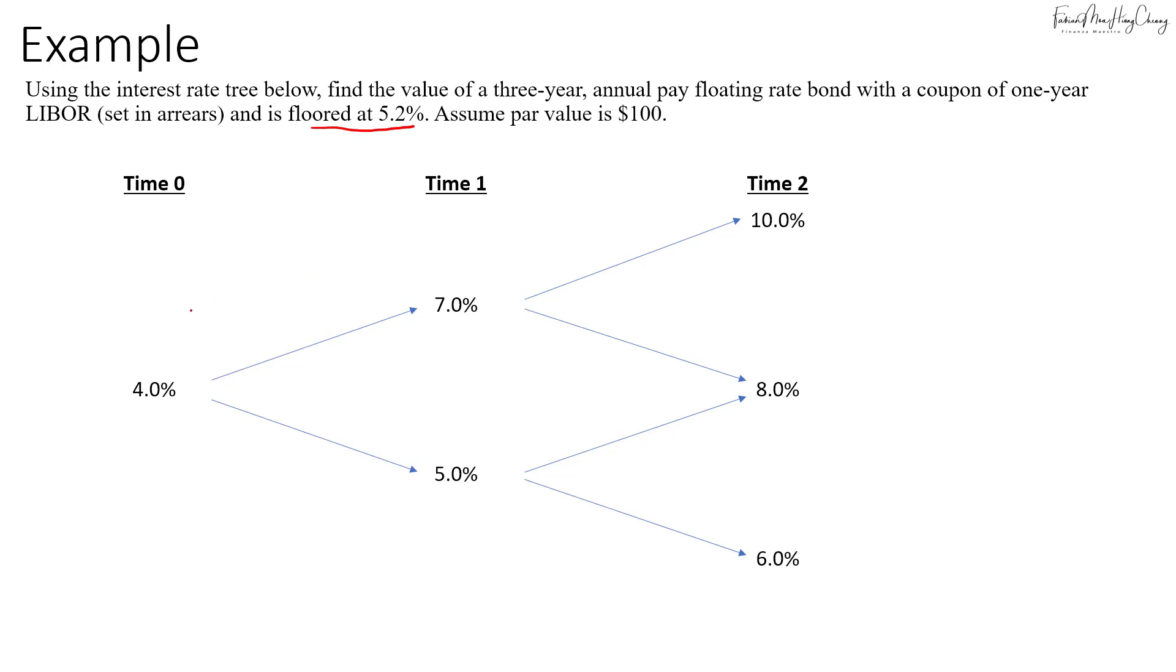First off, determine the coupon. With a 4% LIBOR, the coupon at time 1 will be $4. For 7%, the coupon at time 2 will be $7, and for 5%, the coupon at time 2 will be $5. For the coupon at time 2 of 10%, that means the coupon at time 3 will be $10, so that would be $110. For 8%, the coupon will be $8, so that's $108, and for 6%, that would be $106.